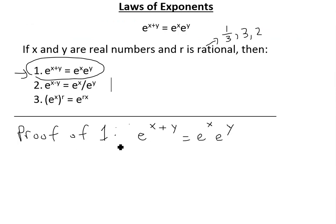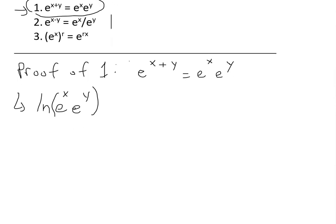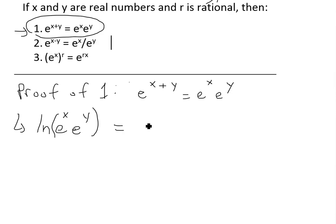The proof of 1: e to the x plus y equals e to the x times e to the y. The first thing we can do is write e to the x times e to the y as a logarithm to take the ln of it. The reason we're doing this is because we're going to use ln properties or log laws to separate this out and simplify it. You can see more on this in the video link below.